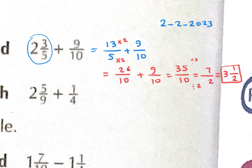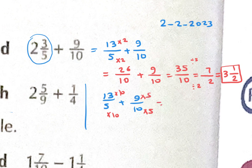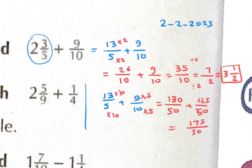Alternatively, if you multiply 5 by 10 and 13 by 10, and multiply 10 by 5 and 9 by 5, you get 130 over 50 plus 45 over 50, which equals 175 over 50. You can divide by 5 or by 25 to get 7 over 2, which is 3 and 1 over 2. Same answer — the first method is easier.